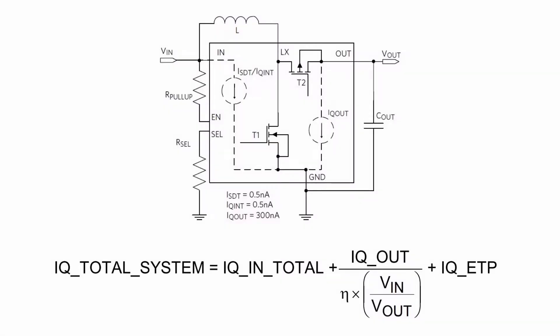The quiescent current of the system comprises of the input quiescent current, the output quiescent current, and the transient protection quiescent current.